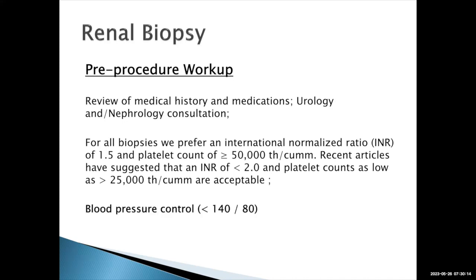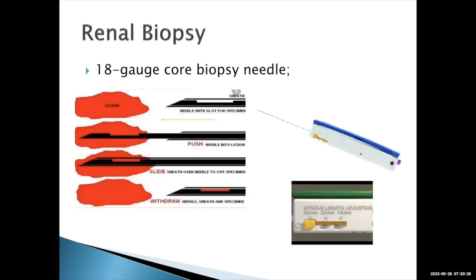We also want good blood pressure control — a systolic less than 140 and diastolic less than 180, as higher blood pressure increases the risk of post-procedural hemorrhage. We use an 18-gauge core biopsy needle. There are two kinds: needles that use a tray system where you deploy the tray into the lesion — the tray is where the sample will be obtained, and the dead zone is where no biopsy material is collected. You deploy the tray, fire it, the sheath slides over the needle and cuts the specimen.